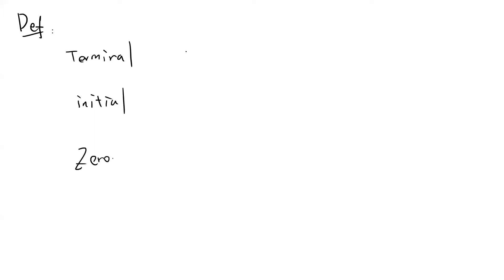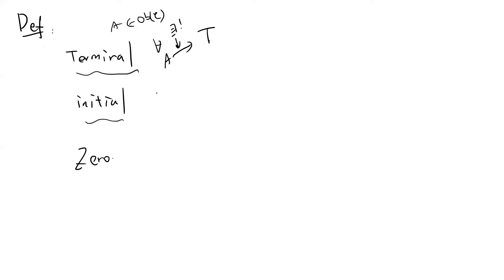Let's talk about the terminal object, initial object, and zero object. The terminal object T means that for any object A in the category, there always exists a unique map from A to T. The initial object I means there exists a unique morphism from I to any object A. The zero object means it is both terminal and initial.